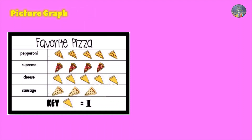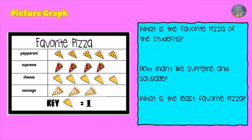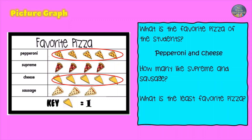Let's do a chart on favorite pizza. What is the favorite pizza of the students? Pepperoni and cheese. How many like supreme and sausage? Four like supreme and three like sausage.